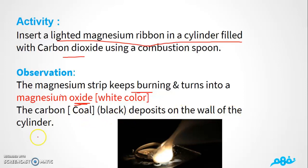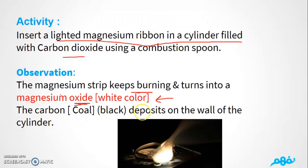So what happens in this experiment: if we put a lighted magnesium ribbon in a cylinder of carbon dioxide, two things occur. First, the magnesium strip keeps burning and turns into magnesium oxide — white color. Second, carbon (cool/soot) forms and deposits on the wall of the cylinder. So we get magnesium oxide (white) and carbon (black) deposited on the cylinder wall.